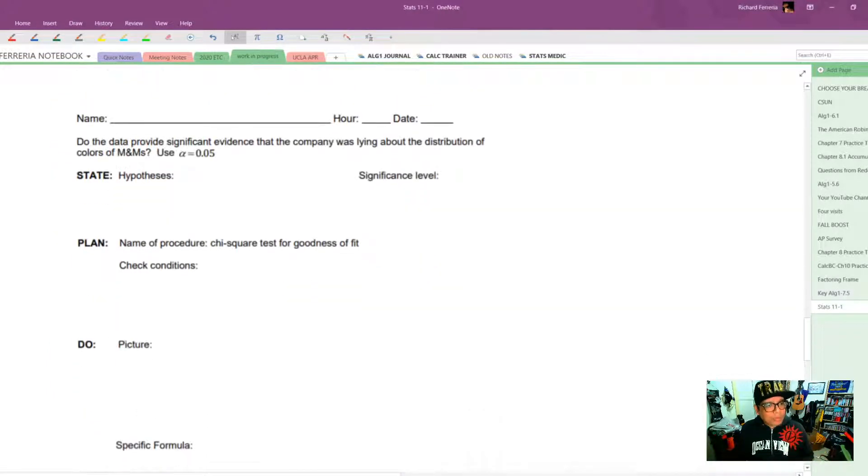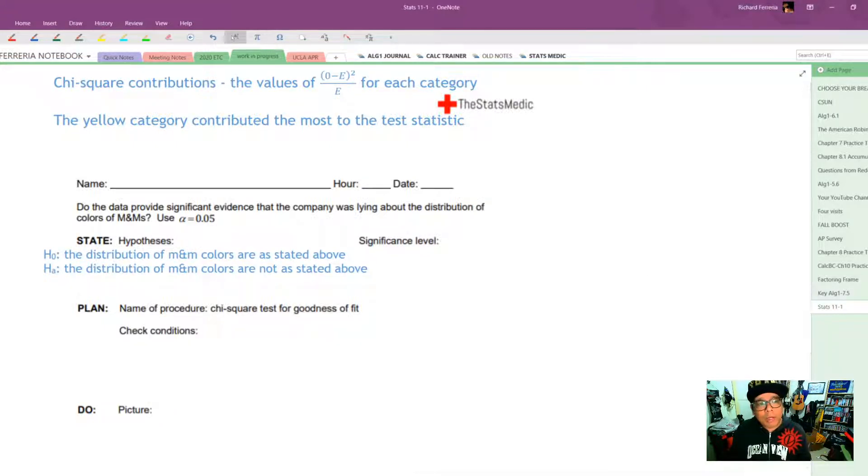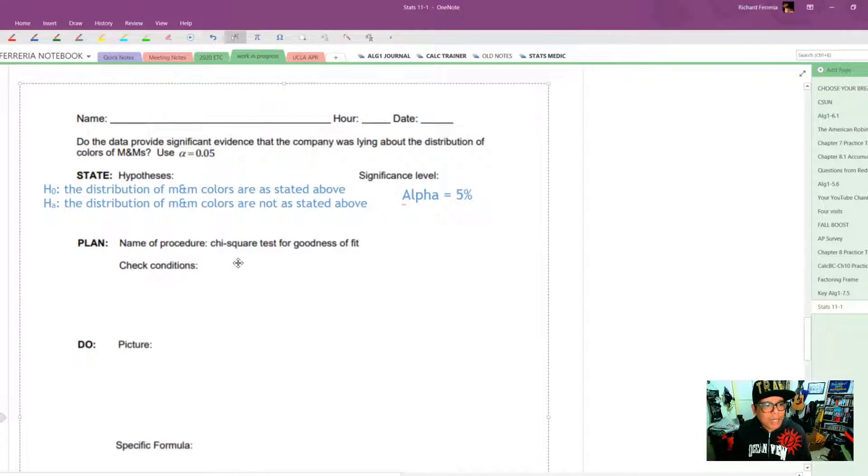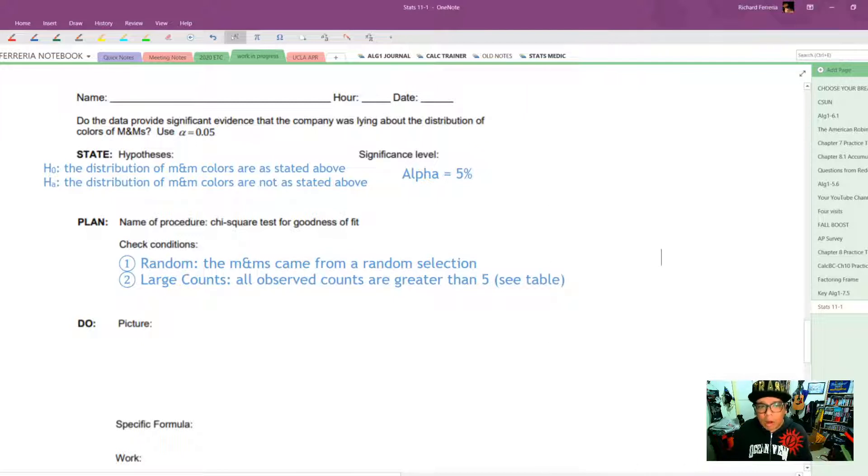So next, we have the whole sheet that helps us do the four-step process. So let's put all of these pieces together. Hypotheses. Either the hypothesized or the distribution of M&M colors are as stated above, or the distribution of M&M colors are not as stated above. Our significance level, alpha, is equal to 5%. The name of the procedure is a chi-square test for goodness of fit. The next is those two conditions. The two conditions for every chi-square test are random and large counts. We would say that the M&Ms came from a random selection. And then we would say that all observed counts are greater than 5. See the table above.